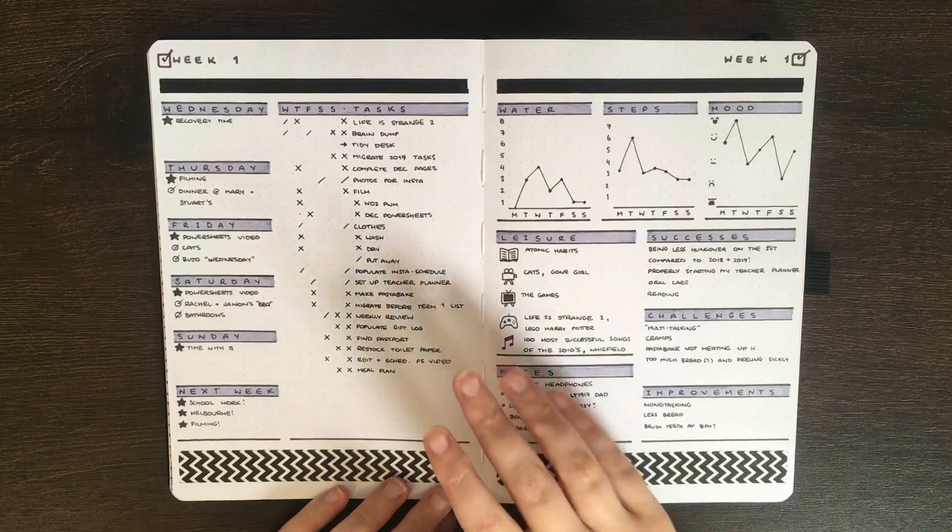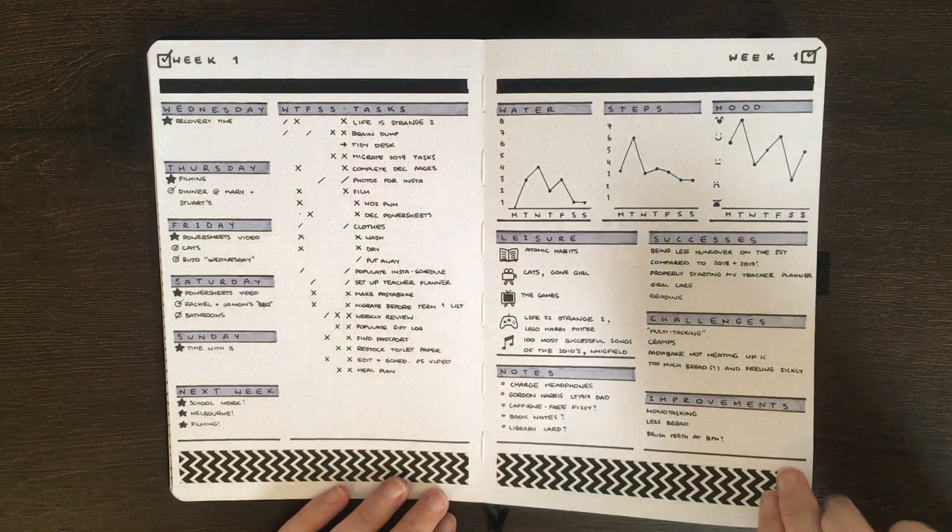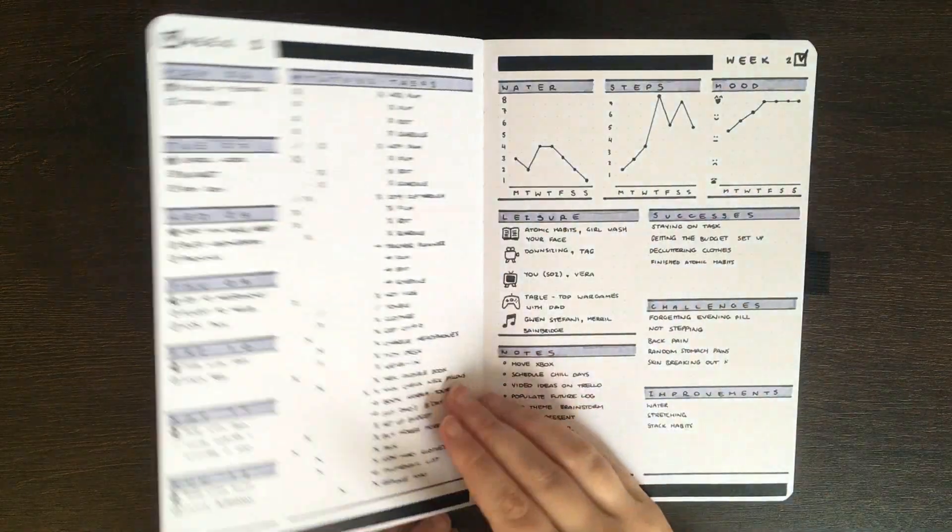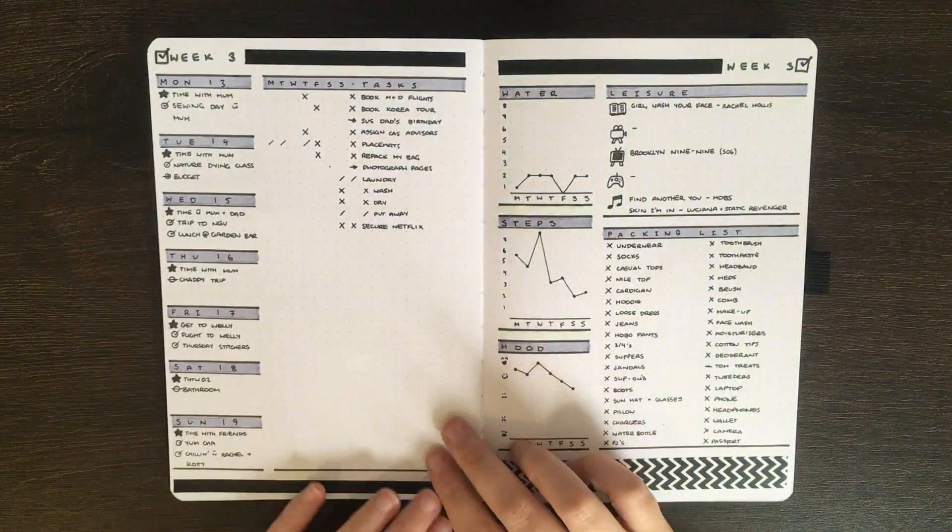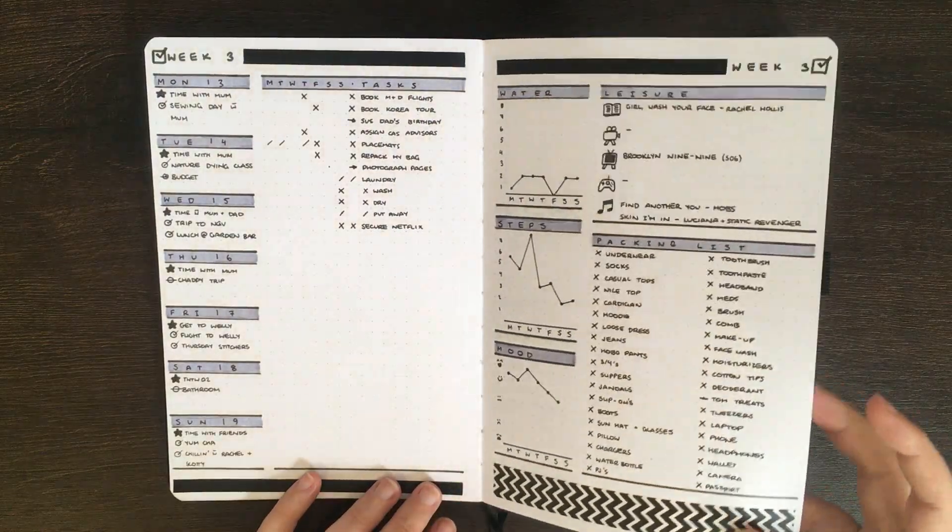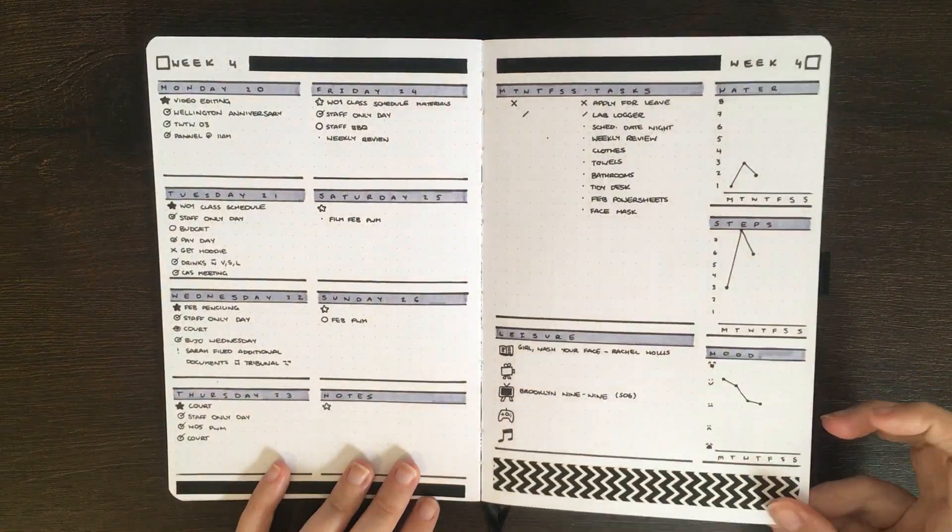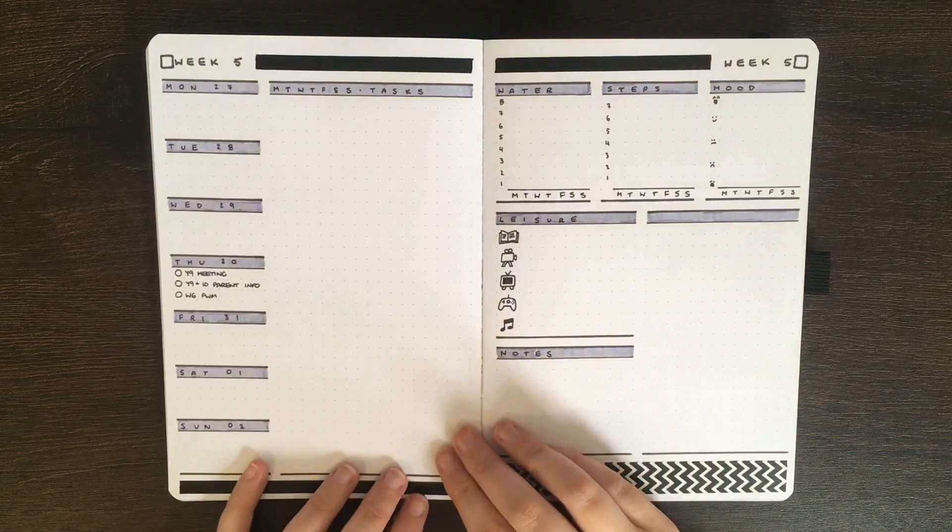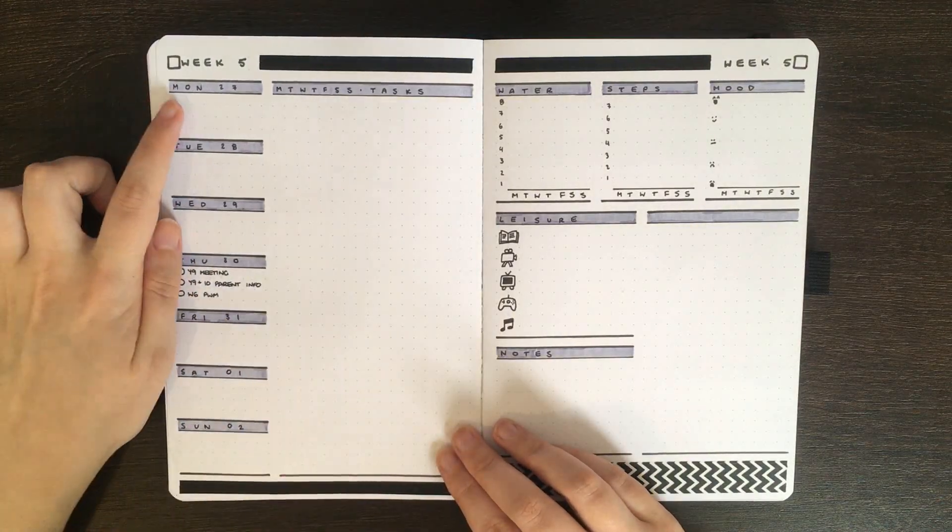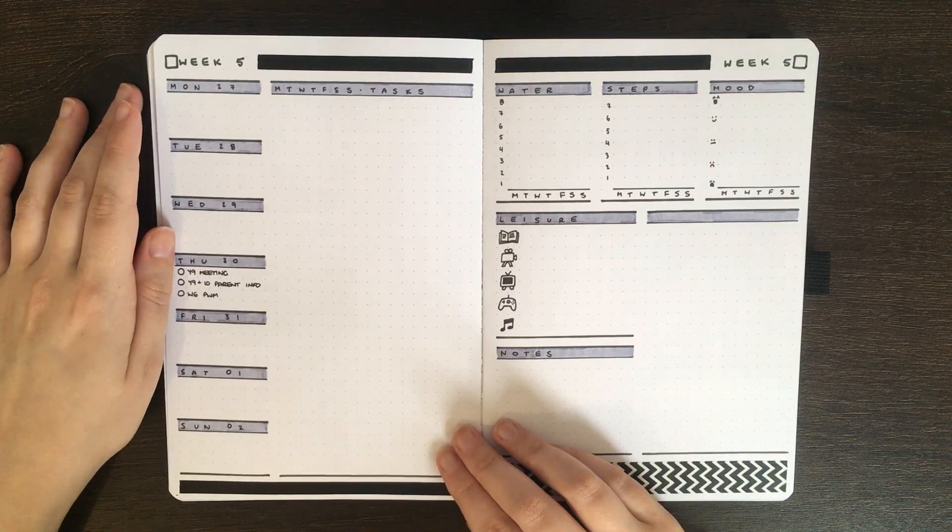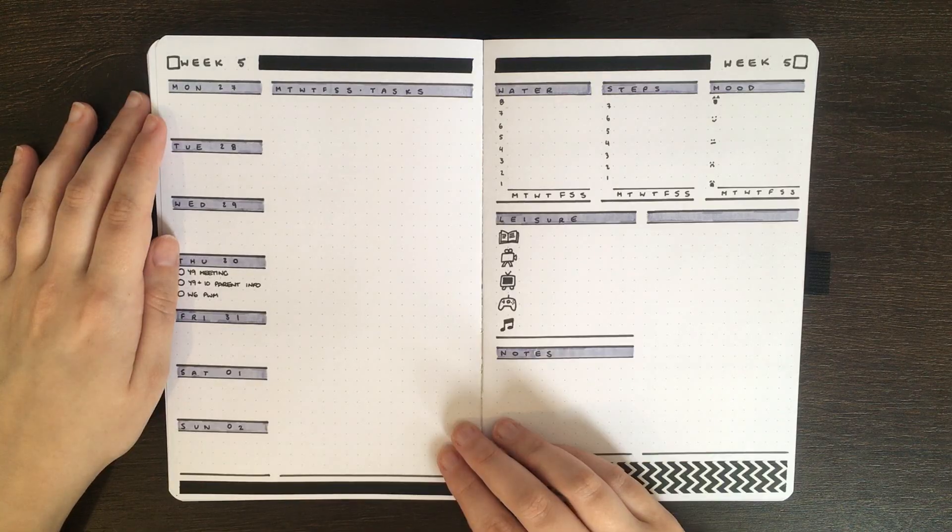And then we're into my weeklies. Each of my weeklies for this month have been based around the same elements, just arranged in different ways. Because it's January 25th at the moment, and this weekly doesn't start till the 27th, this one hasn't really been used. But as it's going to be the first week back at school, I'm sure this will be plenty full come the end of the month.